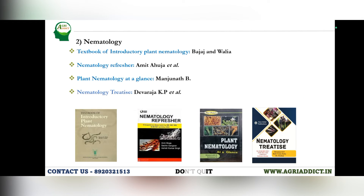For the nematology portion, the 'Textbook of Introductory Plant Nematology' by Bajaj and Walia is the best book available. It is written by ICAR authors and thorough reading is a must. Every chapter is important — from the history of nematology and taxonomy of nematodes, to biology, ecology, integrated nematode management, economically important nematodes like root-knot nematode and burrowing nematode, minor nematodes like dagger, needle, and stubby root, and entomopathogenic nematodes. Aspirants must revise this book at least five to six times.